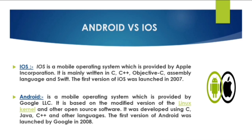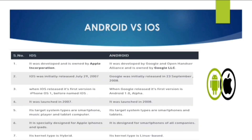The first version of iOS was launched in 2007. Android is a mobile operating system provided by Google LLC. It is based on a modified version of the Linux kernel and other open-source software. It was developed using C, Java, C++, and other languages. The first version of Android was launched by Google in 2008.